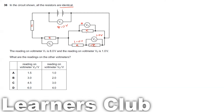Since this resistor is in parallel with these two series resistors, when in parallel they share the same PD: 1.0V + 1.0V = 2.0V. So this entire parallel combination gets 2.0V, and V4 reads 2.0V.